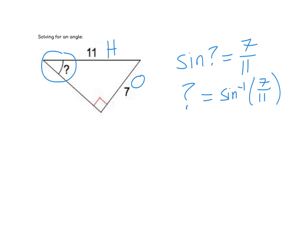Plugging this into a calculator, we've got to make sure we are a little bit careful with parentheses. Some calculators will not understand if you do 7 divided by 11 without closing the parentheses, and you get an error because that's not in the domain. If we set that up correctly, we get that the unknown angle is equal to 39.52 degrees.